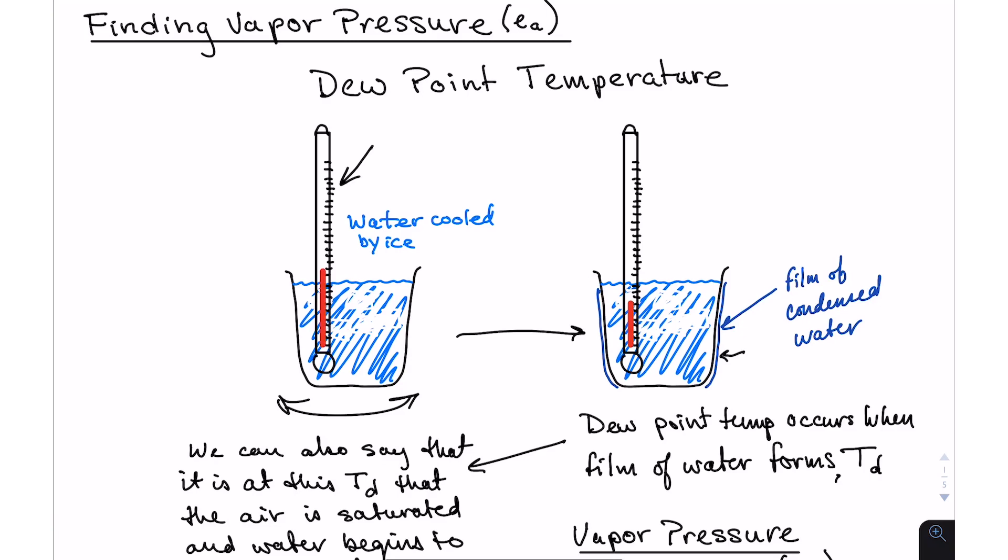At the point that the film began to form, we looked at the temperature and took that as the dew point temperature. It means exactly what it says, the point at which dew began to form. Of course, this experiment wasn't perfect because there is certainly a temperature difference between the inside of our glass where we're stirring with the thermometer and the outer surface of the glass, but it was a good approximation and a great way to demonstrate what dew point temperature is.